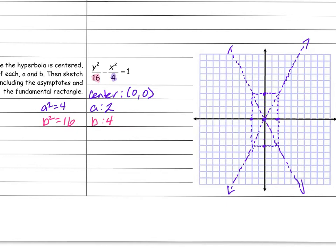Now I need to ask myself: which way does this hyperbola open — left and right, or up and down? That will tell me where my vertices are. I look at what letter comes first. Y is first, so it's opening up and down. Since it's opening up and down, my vertices are going to be at (0, 4) and (0, -4).